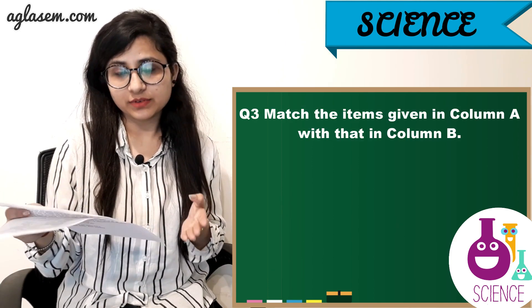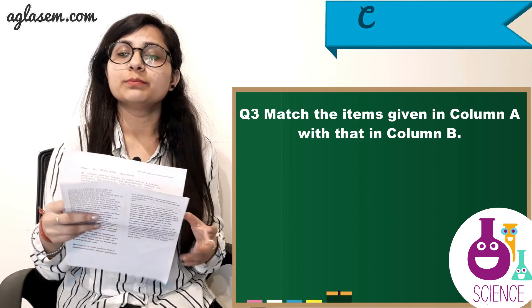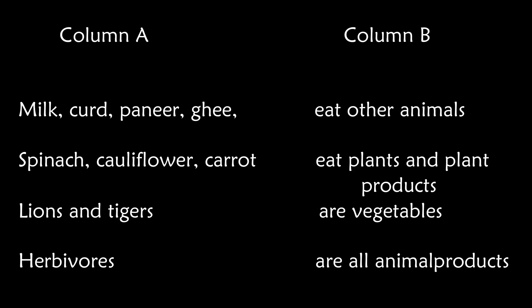Question number 3: Match the items given in column A with those in column B. The items in column A are: 1. Milk, curd, paneer, ghee. 2. Spinach, cauliflower, carrot. 3. Lions and tigers. 4. Herbivorous. The items in column B are: eat other animals. 2. Eat plants and plant products. 3. Are all vegetables. 4. Are all animal products.